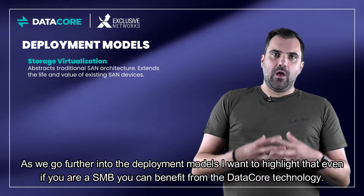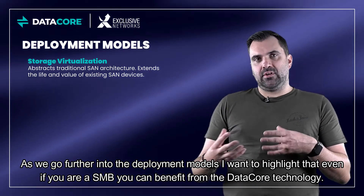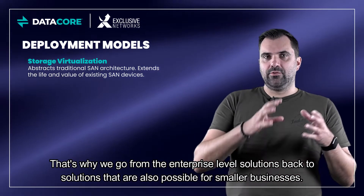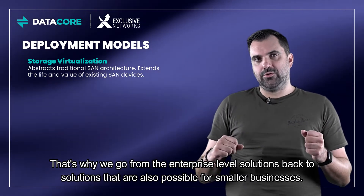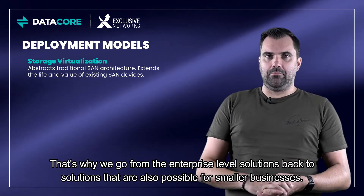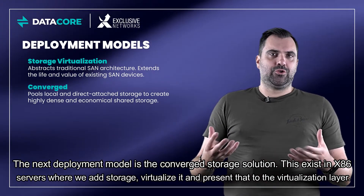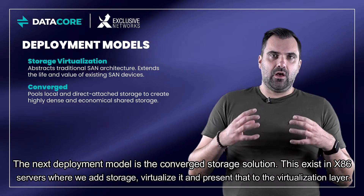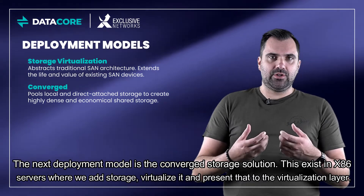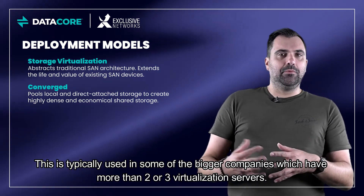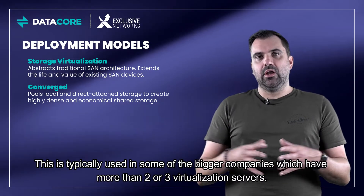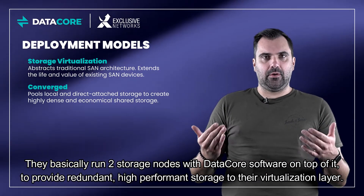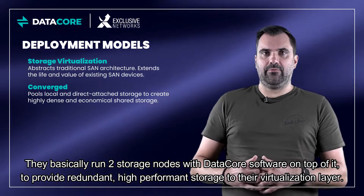As we go further into the deployment models, I want to highlight that even if you're a small or medium business, you can benefit from the DataCore technology. The next deployment model is the converged storage solution. This exists in x86 servers where we add and virtualize storage and present it to the virtualization layer. This is typically used in bigger companies with more than two or three virtualization servers, running two storage nodes with DataCore software to provide redundant, high-performance storage.